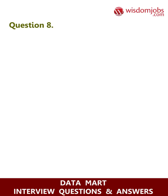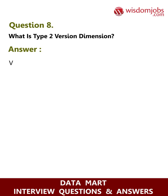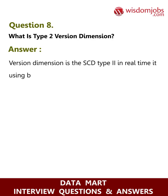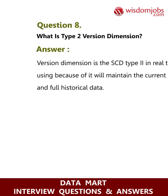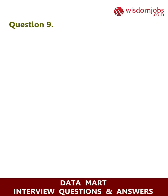Question 8: What is Type 2 version dimension? Answer: Version dimension, as the SCD Type 2, is used in real time because it will maintain the current data and full historical data.